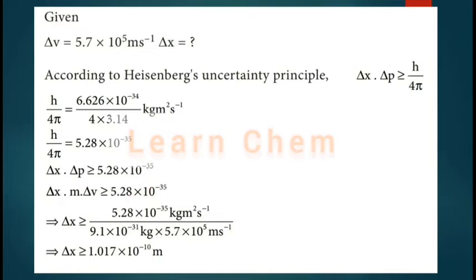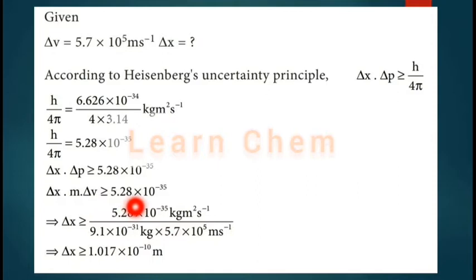Since momentum p = mass × velocity, and there is uncertainty in velocity, Δp = m × Δv. Substituting into the equation: Δx ≥ 5.28×10⁻³⁵ divided by (mass of electron × Δv). The mass of the electron is 9.1×10⁻³¹ kg and the uncertainty in velocity is 5.7×10⁵ m/s. The final answer is 1.017×10⁻¹⁰ meters.